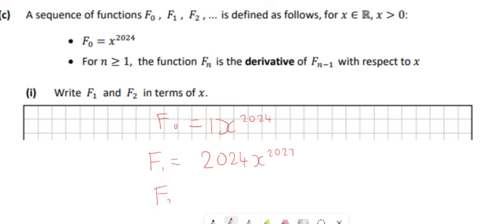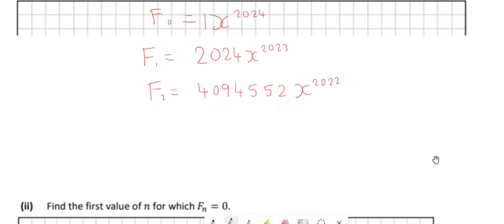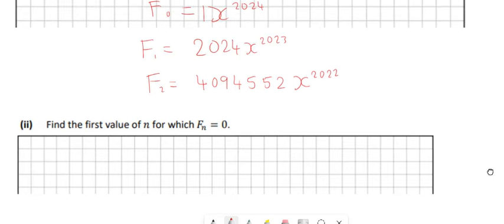F2 then would be, so now I'm going to do 2023 multiplied by 2024 and obviously we're going to get something very big there, so we get 4094552 and then X to the power of 2022, and I drop down the power again. And that's all we have to do for the first part. The second part is a little bit harder to see then.